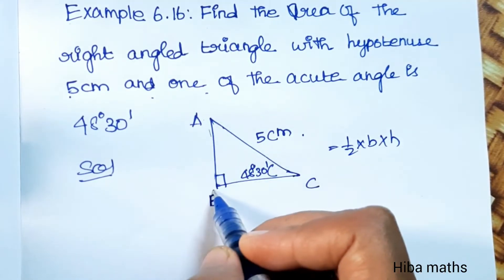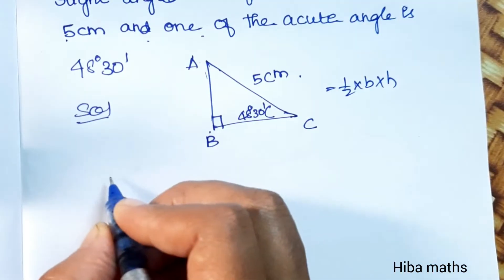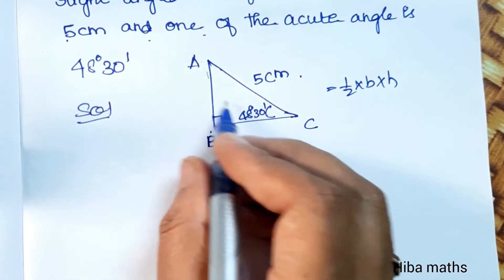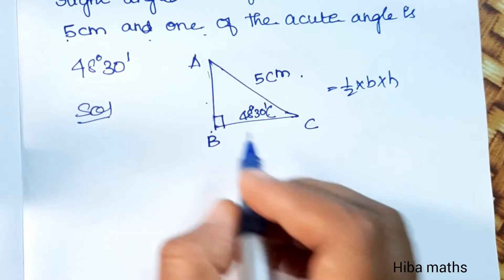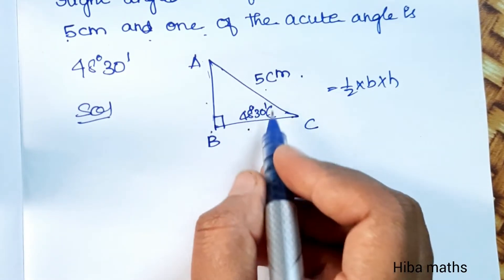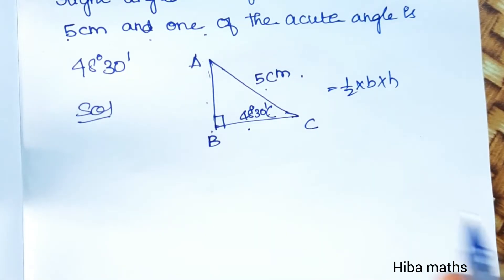We need base value and height value. What we do is, first we use sine theta. Sine theta is the opposite by hypotenuse. Cos is the adjacent by hypotenuse, so height and base. We're going to use this for the area.